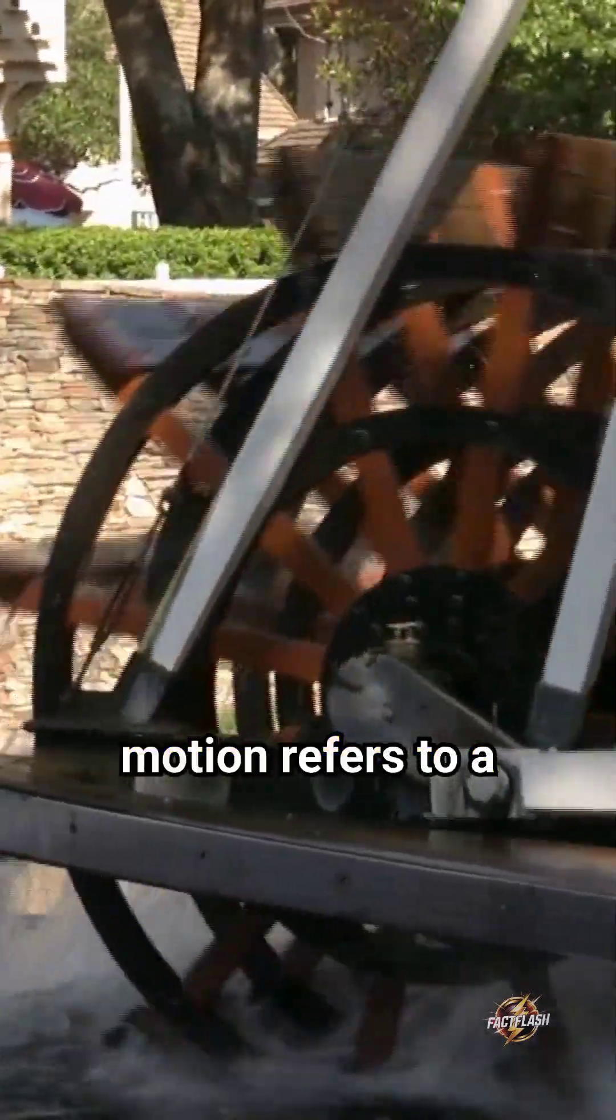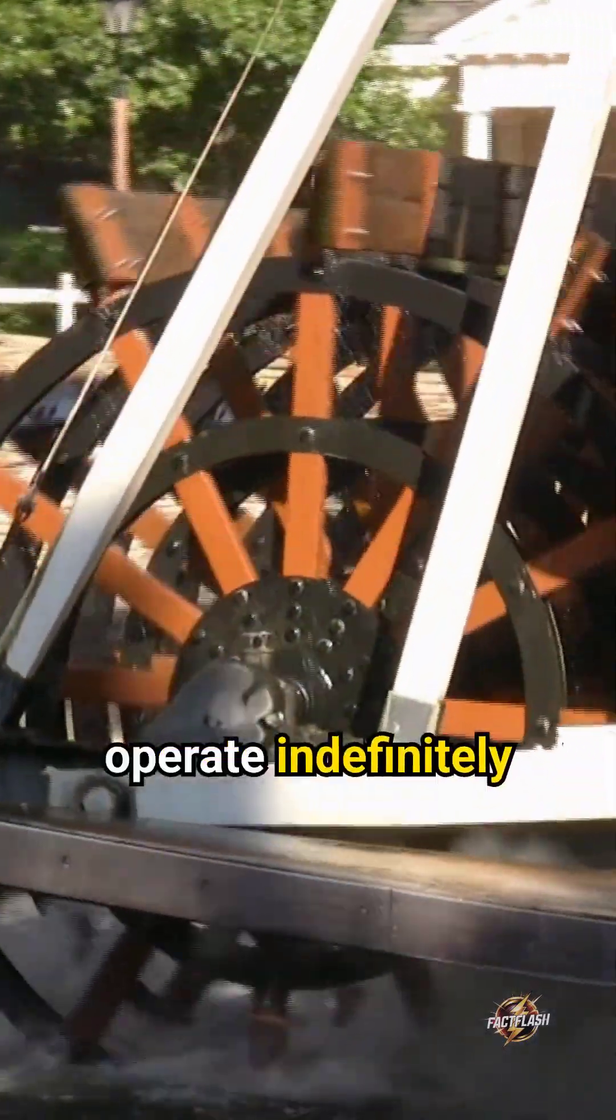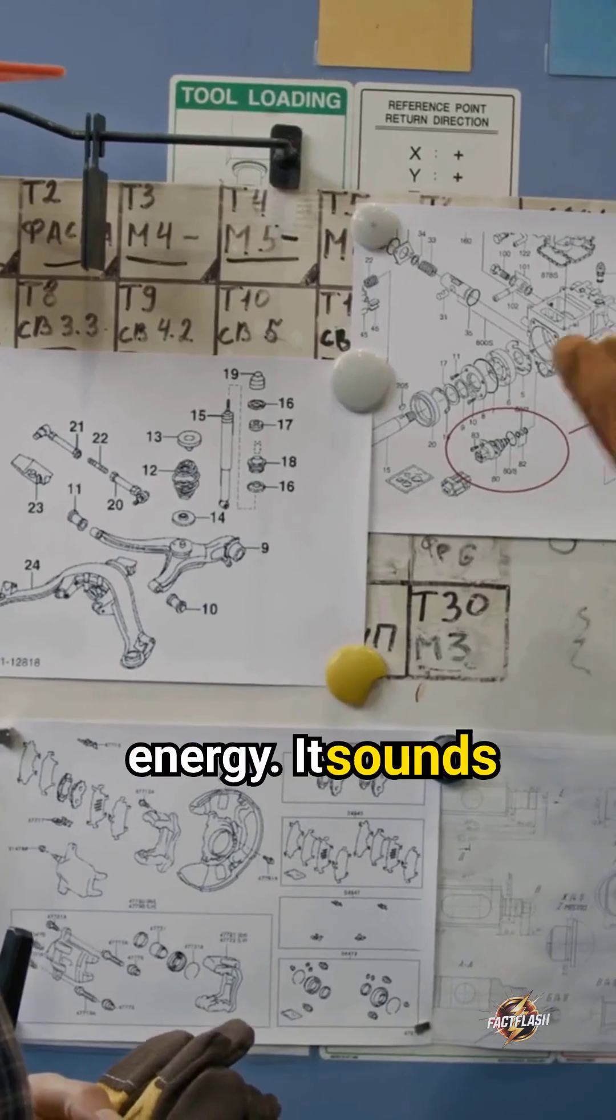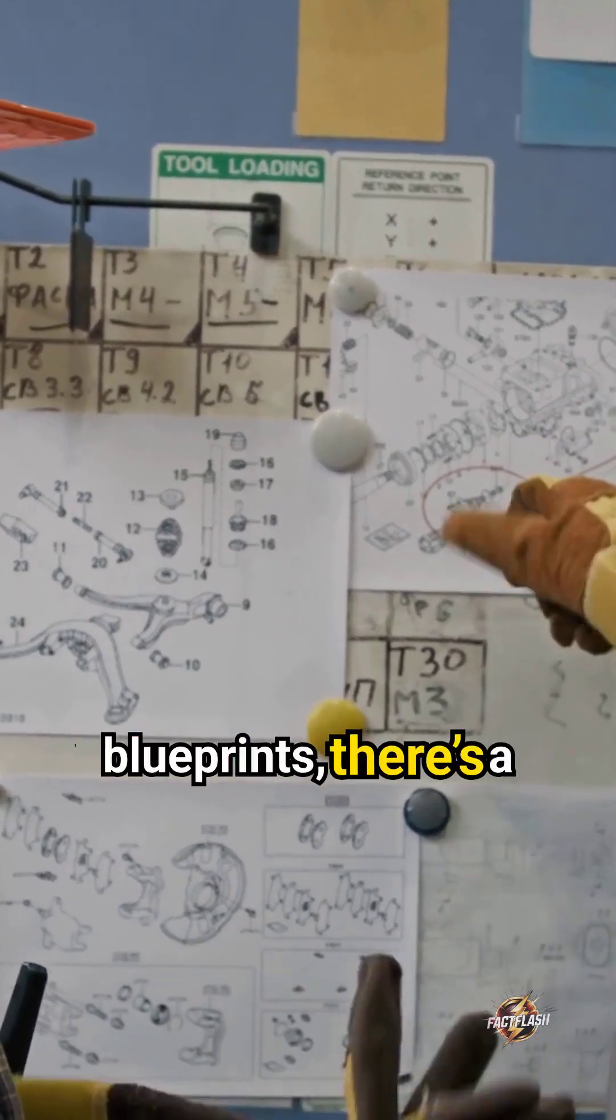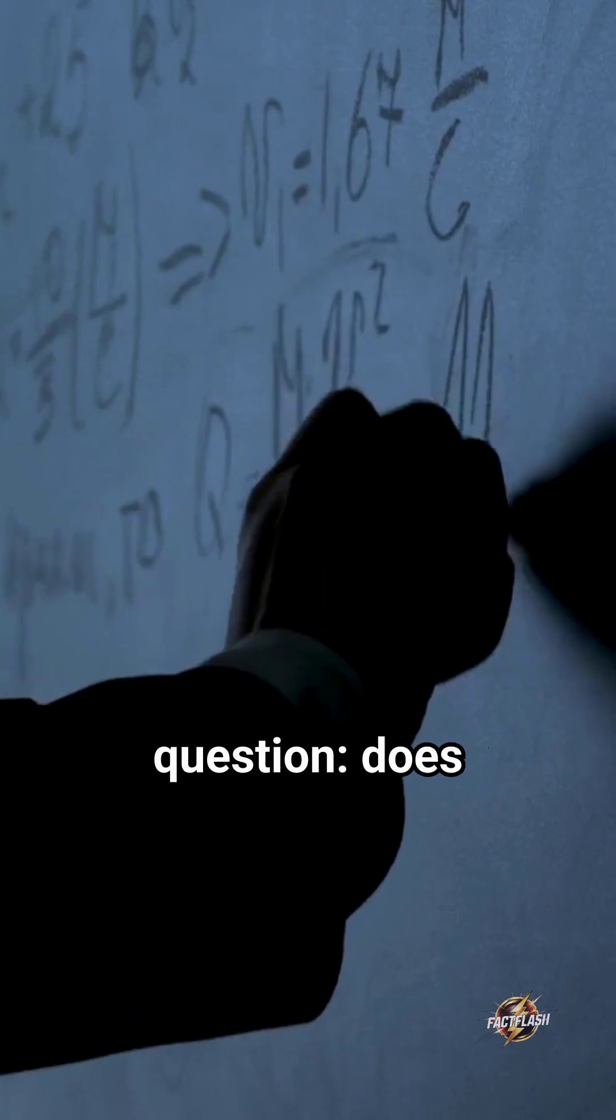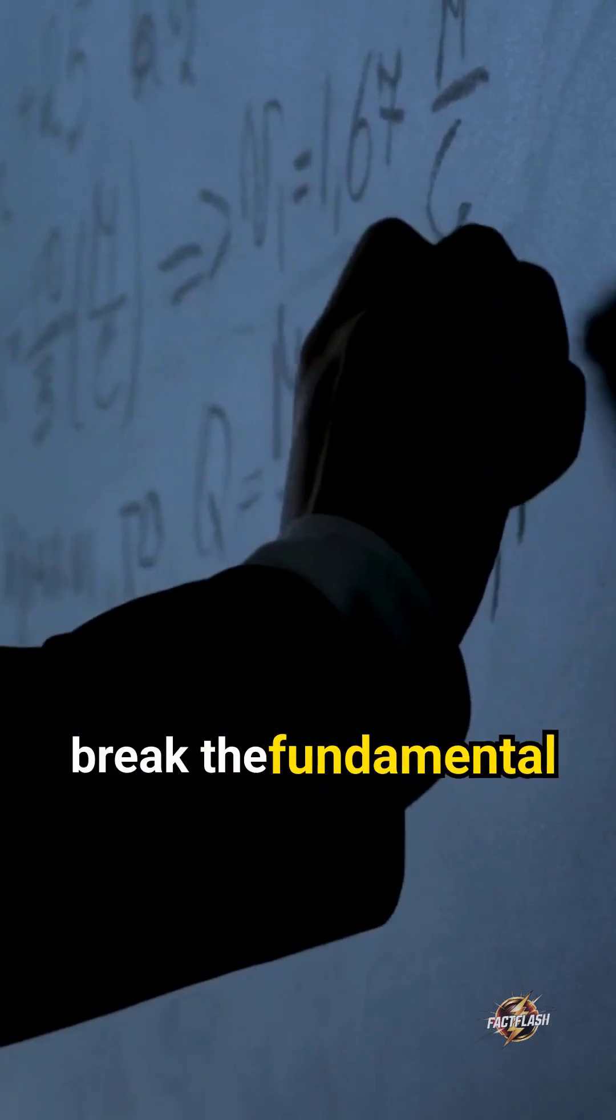Perpetual motion refers to a machine that can operate indefinitely without losing energy. It sounds like magic, right? But before you start sketching blueprints, there's a critical question. Does perpetual motion break the fundamental laws of physics?